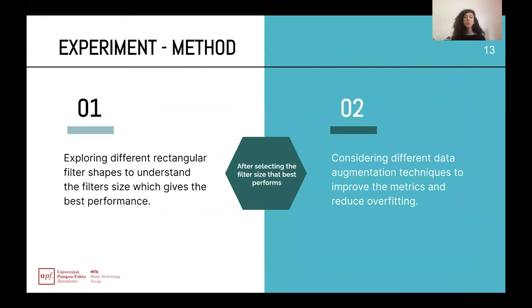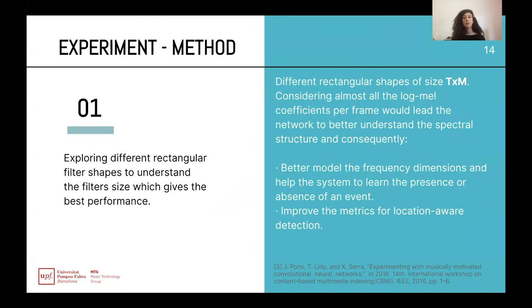The experiment can be seen as two sub-experiments. In the first one, we explore different rectangular filter shapes to understand which filter size gives the best performance. After selecting the best-performing filter size, we consider different data augmentation techniques to improve the metrics and reduce overfitting. In the first part, we consider rectangular filter shapes of size T by F, where T is the time dimension and F is the frequency dimension. We hypothesize that considering almost all the log-mel coefficients per frame will lead the network to better understand the spectral structure of the sound. The use of rectangular filters was introduced by Pons for music classification, and we adapt the concept to sound event detection.